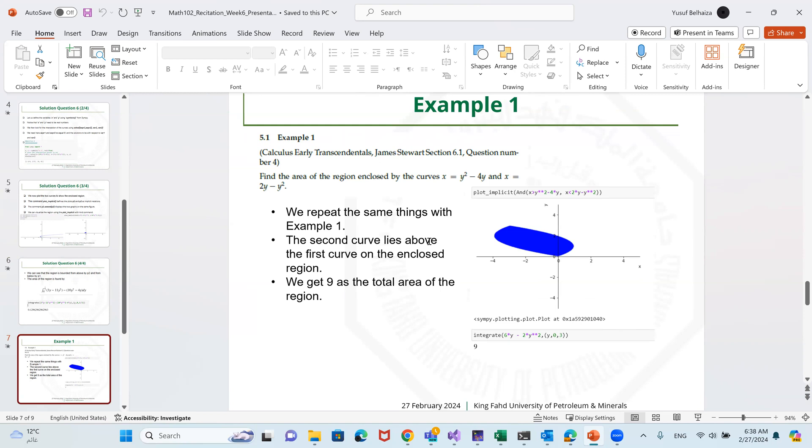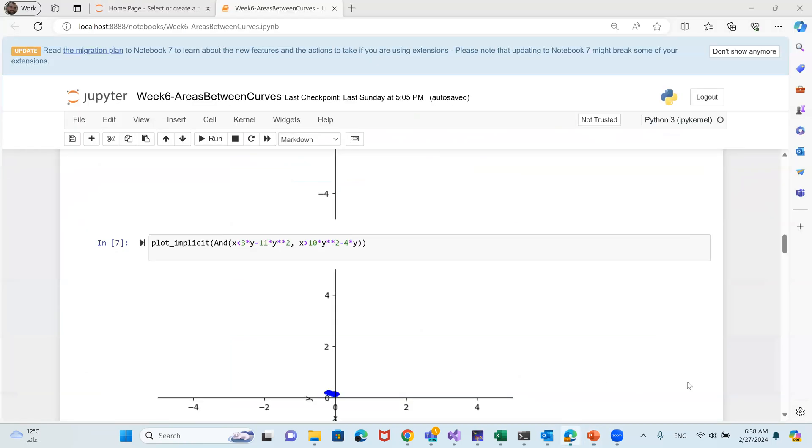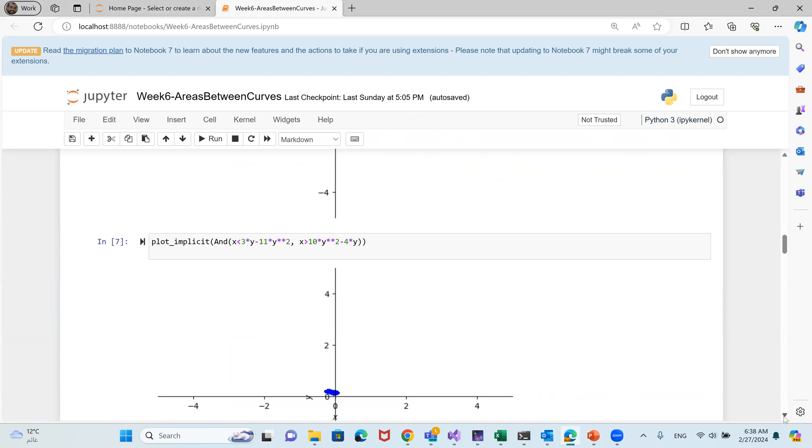Now we will have example one, another example. This is from Stewart calculus book. And we need to find the area of the region closed by the curves x, which is y squared minus 4y, and x is equal to 2y minus y squared. We will repeat the same things as with example one. And we get this graph where the second curve lies above the first curve on the closed region. And we get here 9 as a total area of the region.